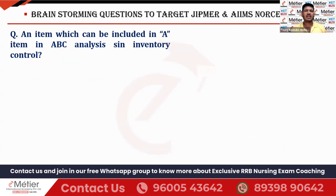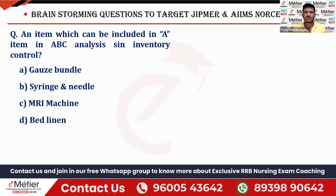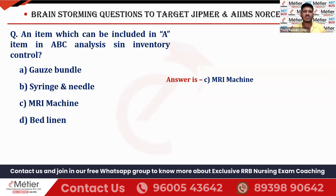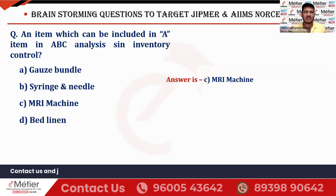The next question: which item can be included in A item in ABC analysis inventory control? Four options given are: gas bundle, syringe and needle, MRI machine, and bed linen. The right answer is Option C — MRI machine. MRI machine comes under A item because it is very costly — a higher value, higher cost item. Gas bundle, syringe, needle, and bed linen are all low cost C items.